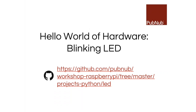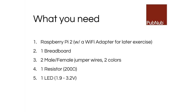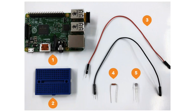Now let's talk about the Hello World of hardware, which is a blinking LED. For software, Hello World is printing a string; for hardware, it's blinking an LED. You're going to create a circuit using: a Raspberry Pi 2, a breadboard, two male-to-female jumper wires in two different colors (I use red for power and black for ground), a 200-ohm resistor, and an LED.